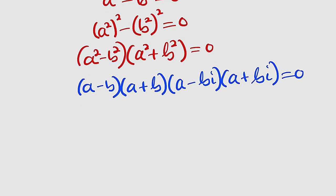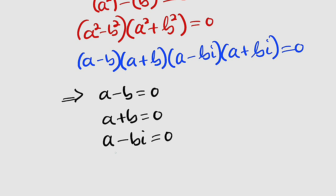We have four factors. Let us set each to be equal to 0. It implies that either a minus b equal to 0, a plus b equals 0, a minus b i equals 0, and lastly, a plus b i equals 0.